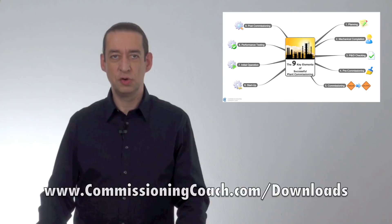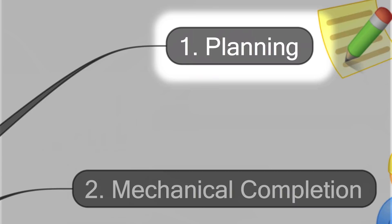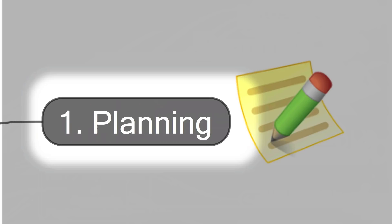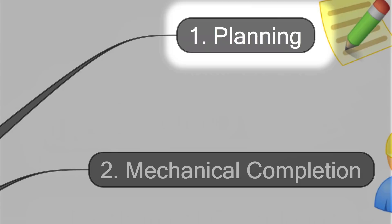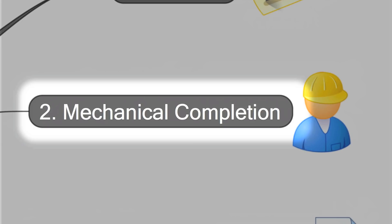The first key element is planning. Without proper planning you will not be able to commission a plant safely and in time. The second key element is MC, or mechanical completion. This is the time when the commissioning team takes over the systems from the construction team.